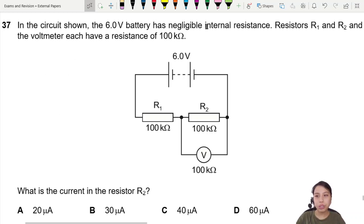In this circuit shown, the 6-volt battery has negligible internal resistance. Resistor R1, R2, and the voltmeter have resistance of 1000 kilo ohm. Very big. Good to know.